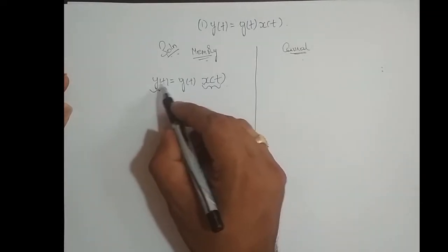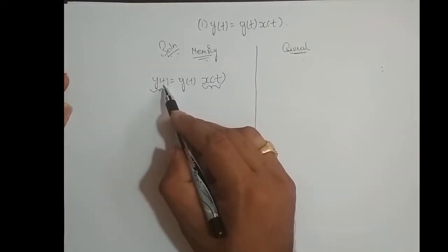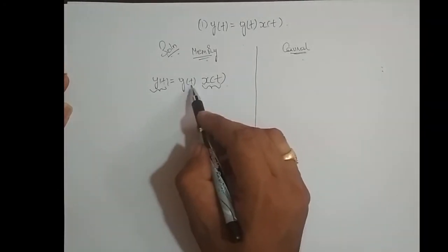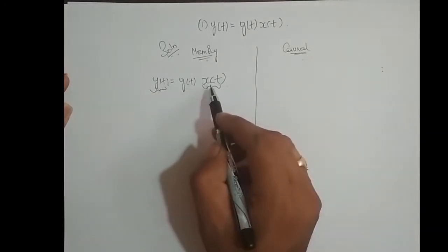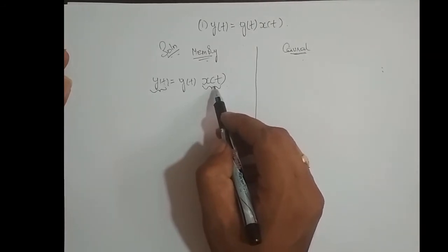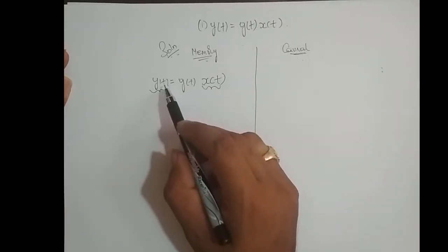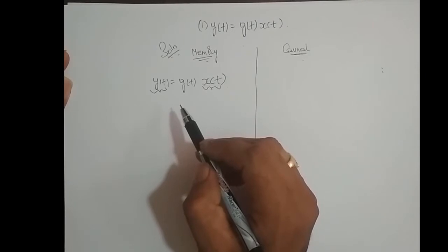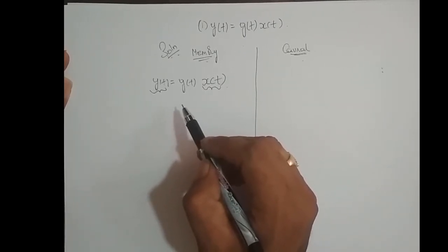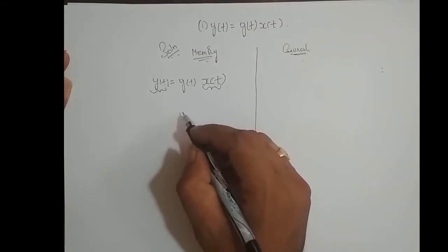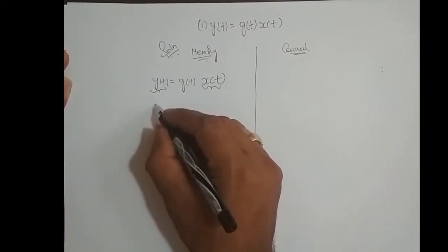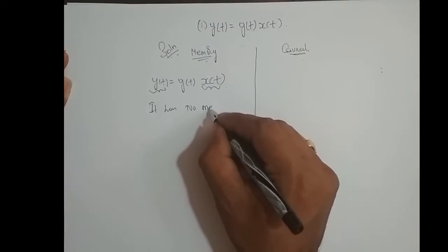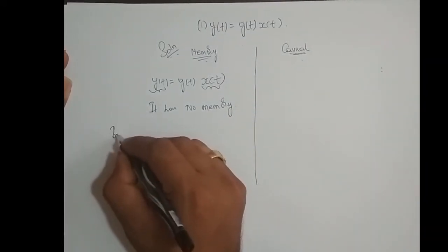For y(t) = g(t)·x(t): if I put t = 0, y(0) = x(0), so output depends upon present input. If t = 10, y(10) = g(10)·x(10), again output depends upon present input. Whatever the value of t we put, present output depends upon present input value. Therefore, this system has no memory, because the present output depends upon the present input value.